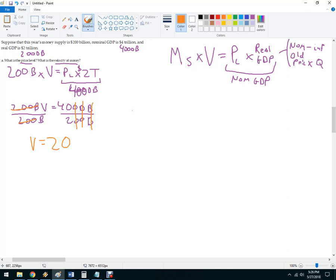Then I can plug it back in and see what the price level is. So 200 billion times 20 equals 2,000 billion times the price level. So here, this is going to end up being 4,000 billion, which is the same as the nominal GDP. And then I'm going to divide by 2,000 billion. Man, these numbers are big. Divide by 2,000 billion.